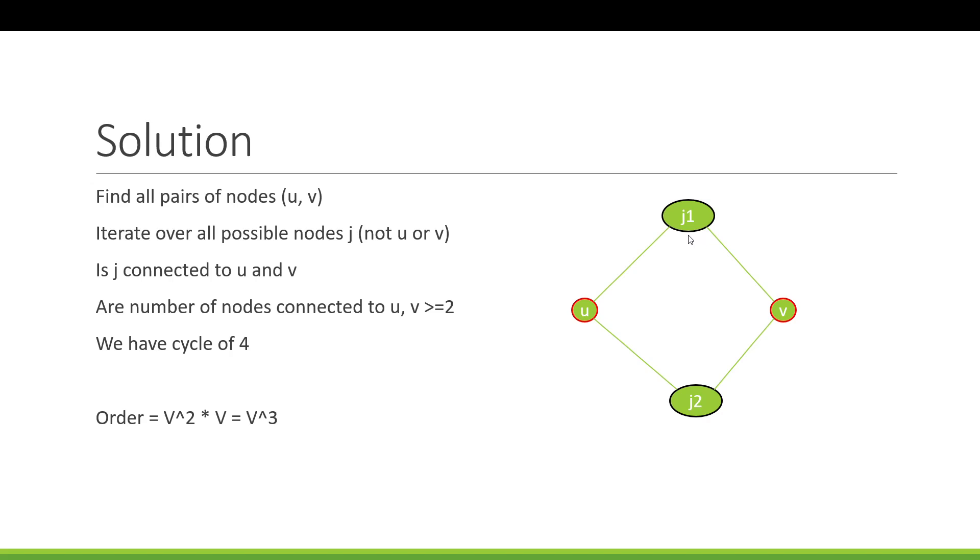And once you have found those nodes, then essentially the solution is that if you find, for any pair, if you find two or more nodes that have this criteria met, that they are connected to both U and V, if that happens, then you have found a cycle of four.